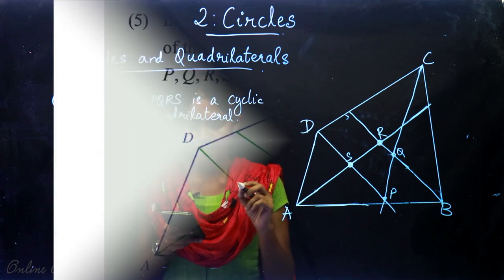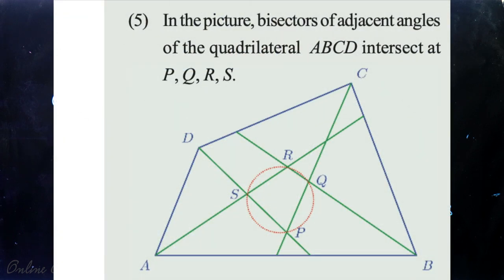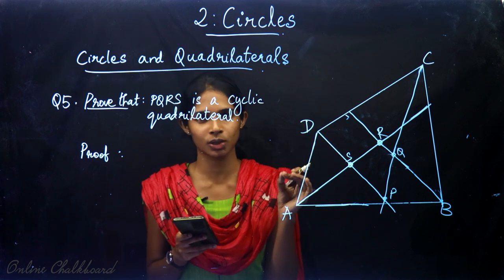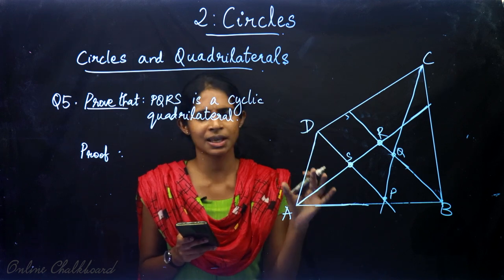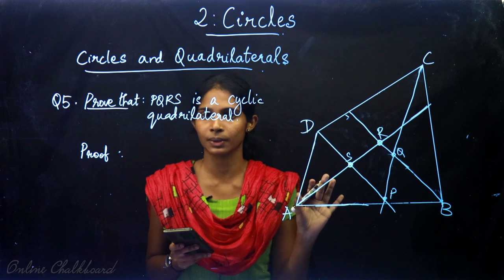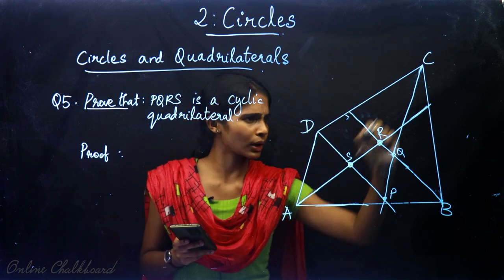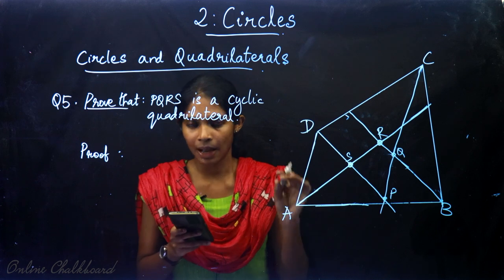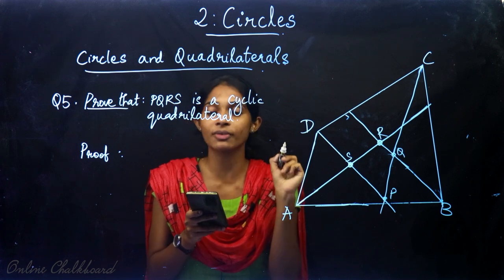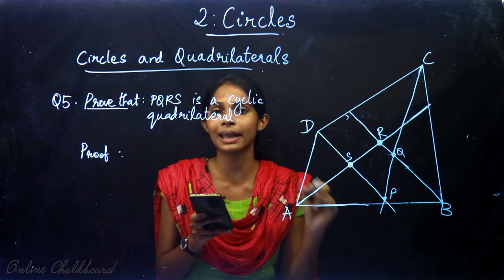In the picture, bisectors of adjacent angles of the quadrilateral ABCD intersect at P, Q, R and S. Prove that PQRS is a cyclic quadrilateral. ABCD is a quadrilateral, and the four lines are angle bisectors of its adjacent angles.